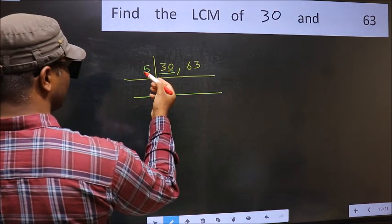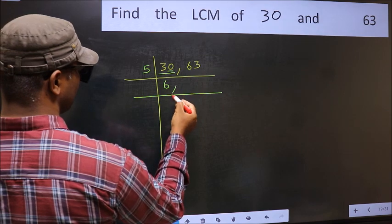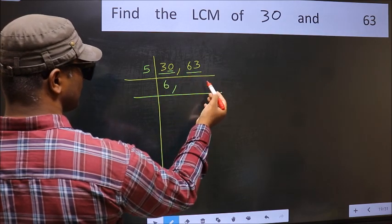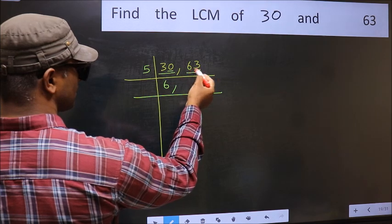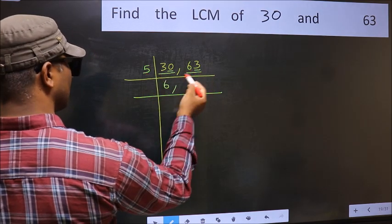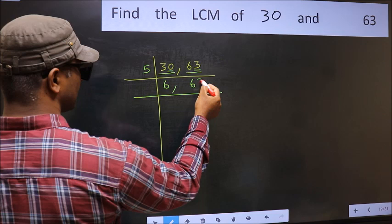When do we get 30? 5 table: 5, 6, 30. The other number, 63. Last digit is neither 0 nor 5, so this is not divisible by 5. So you write it down as it is.